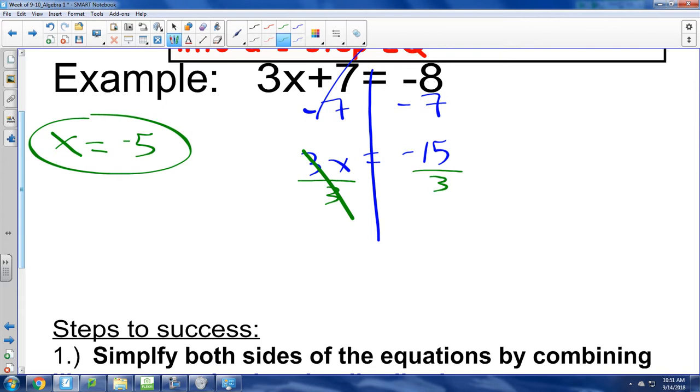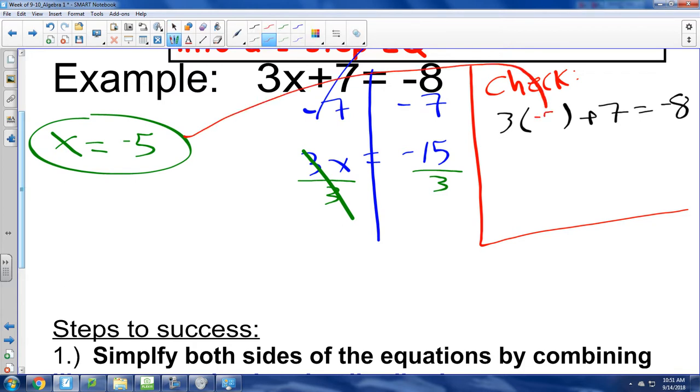Let's check it out real quick. Let's literally check it out. I mean, let's literally check the problem. So we are going to take the negative five and plug it into the original equation, which is 3x plus seven equals negative eight. Well, we had negative five for our x. So let's plug that in right here. What's three times negative five?